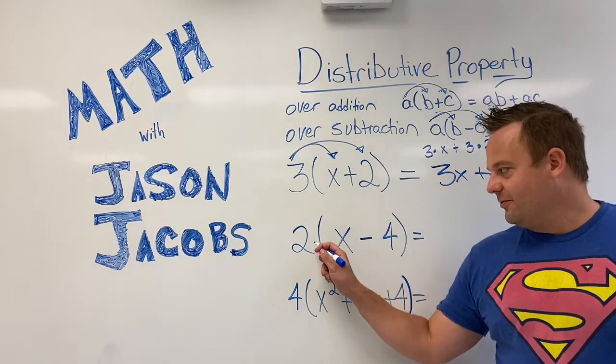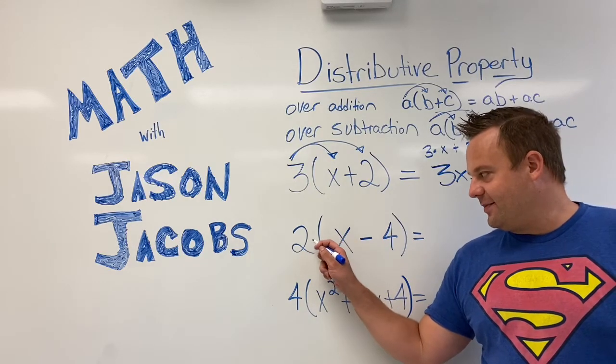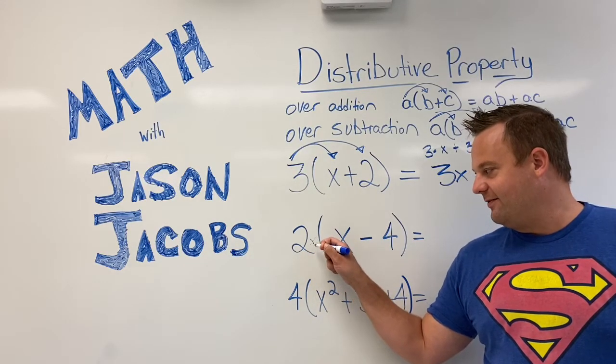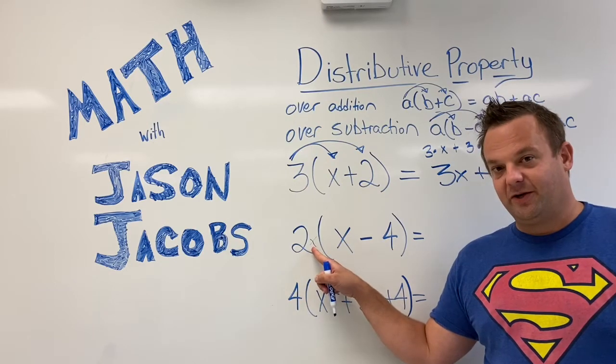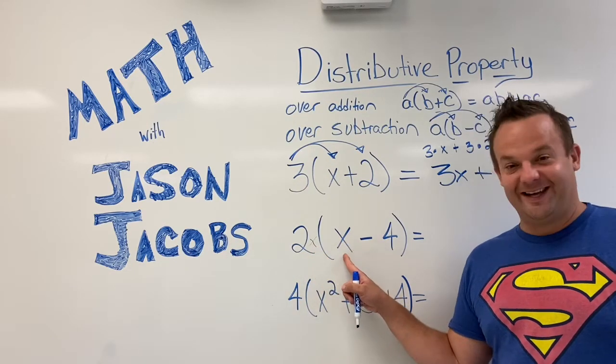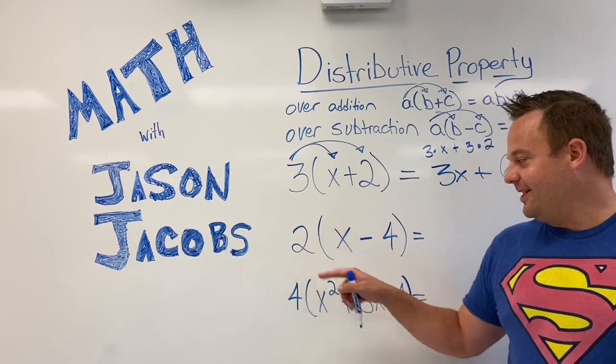And remember, when it's right next to the parentheses, that means you're multiplying. They might even have a multiplication symbol here. Why do you think we don't have a multiplication symbol here? Because it kind of looks like the variable x, right? So anyway.